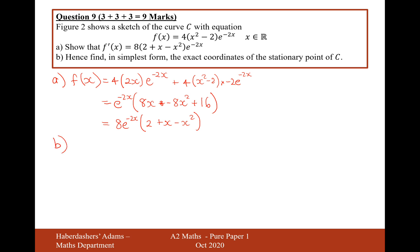Let's now move on to part B. Hence, find in the simplest form the exact coordinates of the stationary points of C. So for stationary points, f'(x) equals 0. Which means, therefore, that 8e to the minus 2x, 2 plus x minus x squared equals 0.